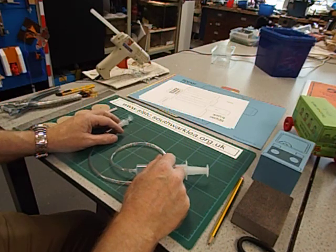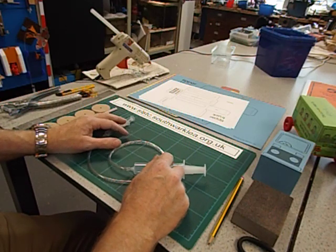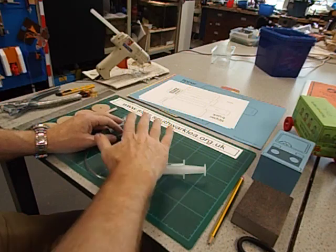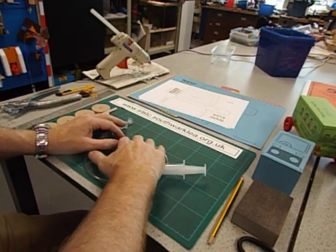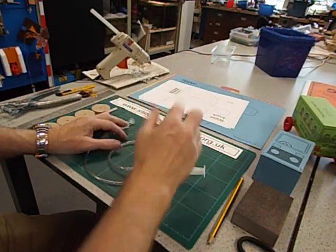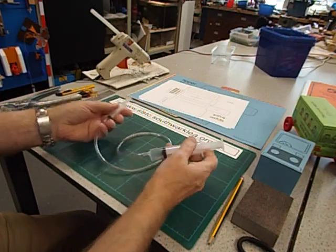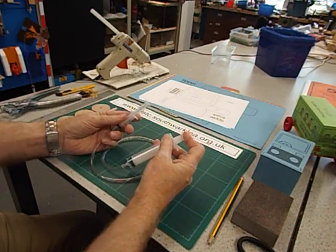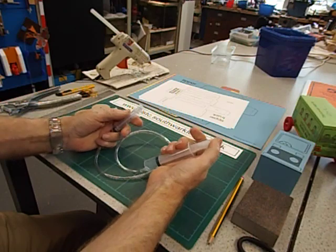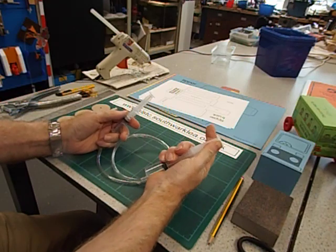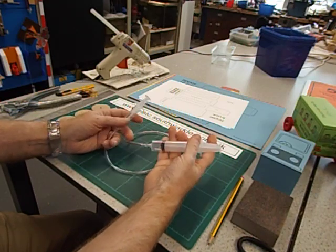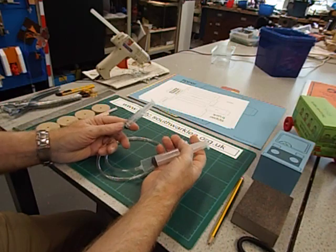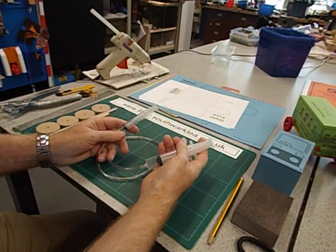In this video I'm going to show you how to make a working tipper truck. We're going to make the back of the truck, raise it and lower it using these syringes. It's an example of a simple pneumatic system. You could even fill the syringes and the tubing with water to make a hydraulic system.